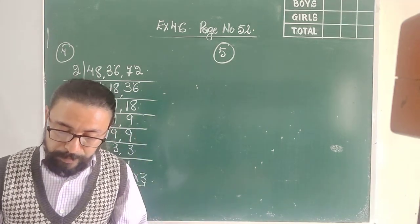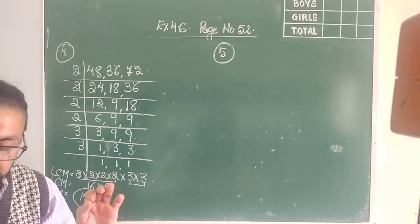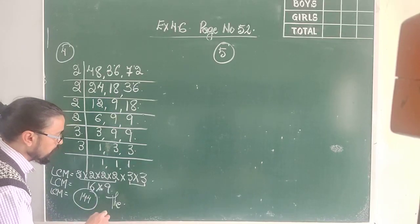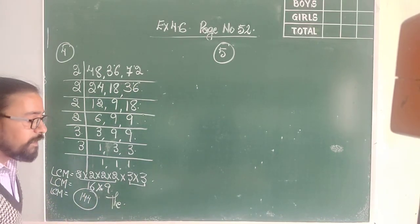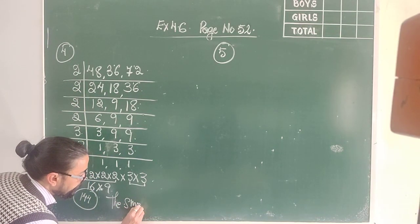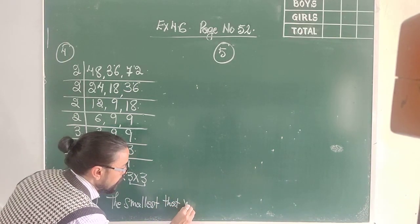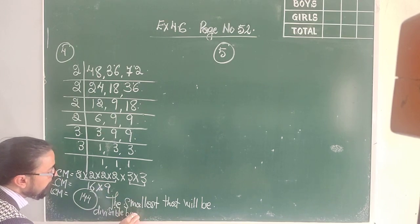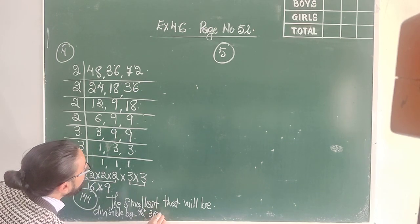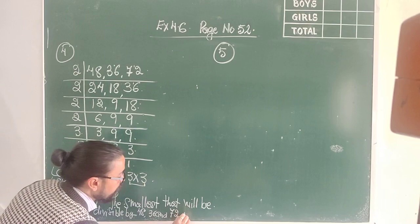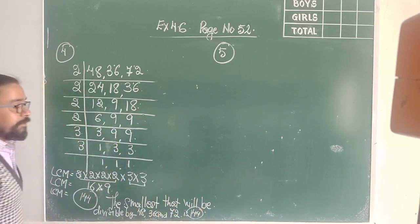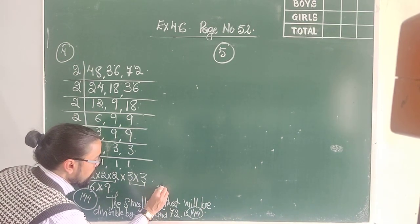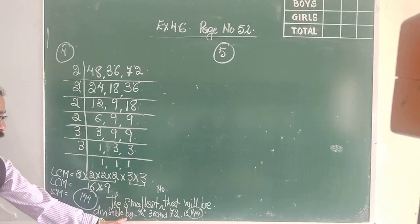Now, since it is a word problem, it's saying find the smallest number which is exactly divisible by 48, 36 and 72. So you have to write the final statement: the smallest number that will be divisible by 48, 36 and 72 is 144.